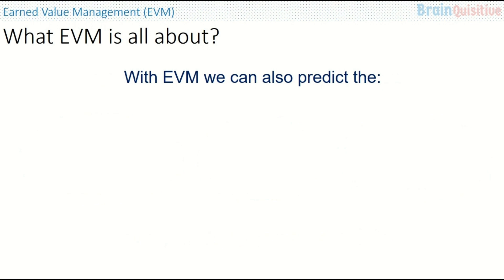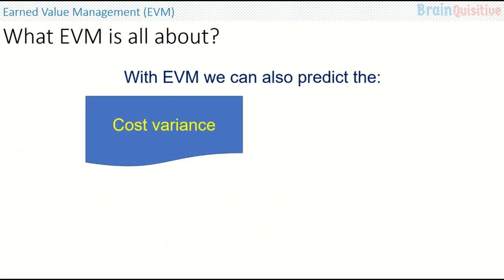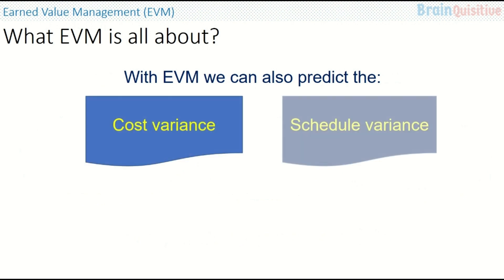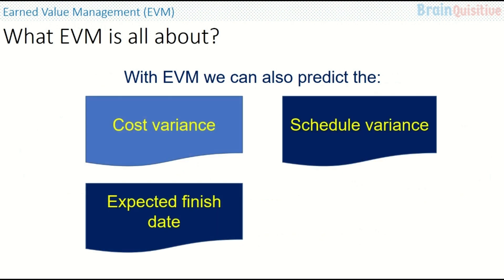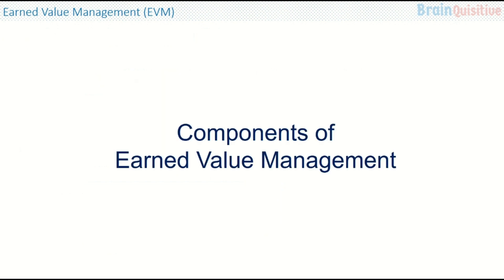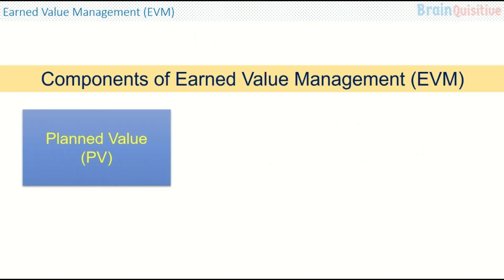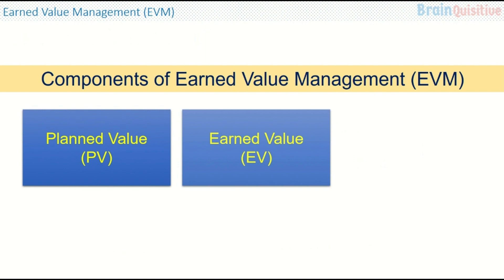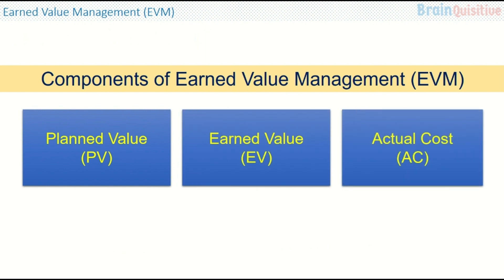With EVM, we can also predict the cost variance, the schedule variance, the expected finish date, and estimated cost of completion of a project. The components of Earned Value Management are: planned value, earned value, and actual cost.